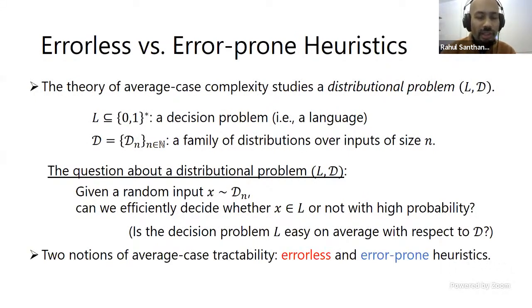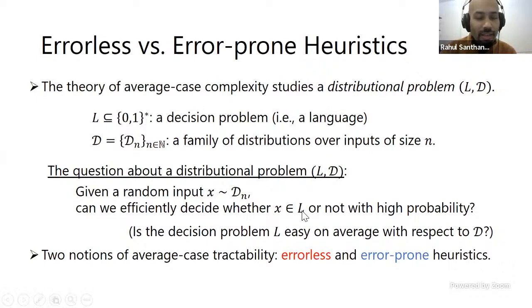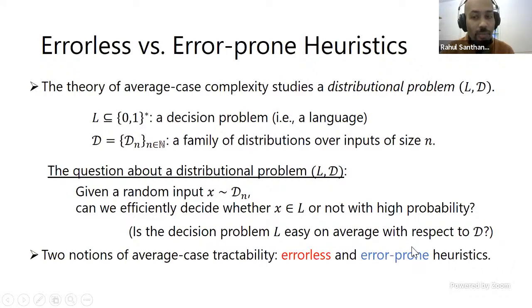There are two natural ways to model this problem, corresponding to whether you're allowed to make errors or not. For most instances, you'll give a correct answer. When you're not giving the correct answer, do you know that you're wrong and therefore can say 'I don't know'? Either you get the correct answer or you don't know — or you sometimes make a mistake. These notions have both been considered extensively in the literature. The first notion is errorless (no mistakes), and the second is error-prone.